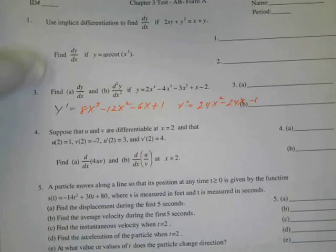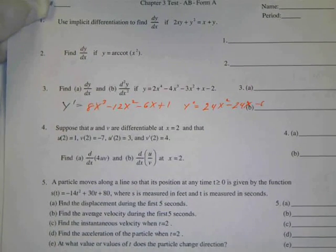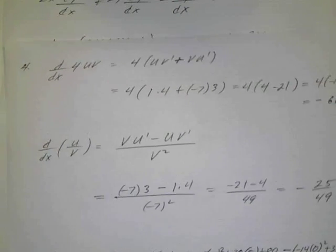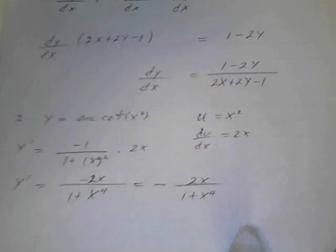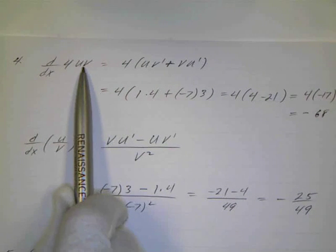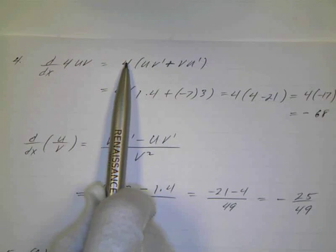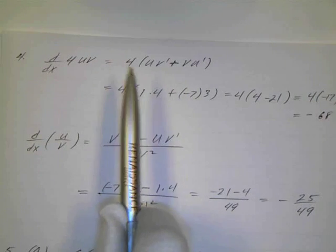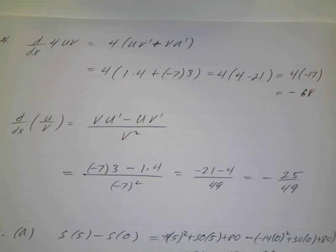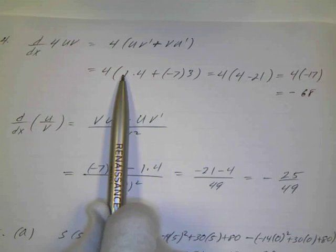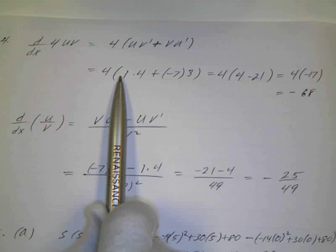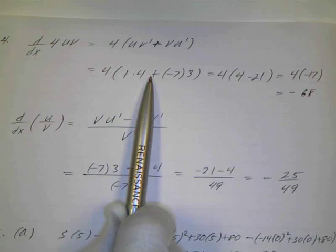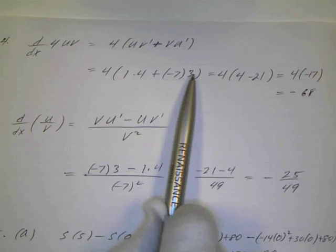Number 4 uses numerical values with the product rule and quotient rule. The derivative of 4uv: pull the 4 outside and use the product rule — u v prime plus v u prime. We substitute the given values carefully, since errors here can carry over. So u is 1, v prime is 4, v is negative 7, and u prime is 3.